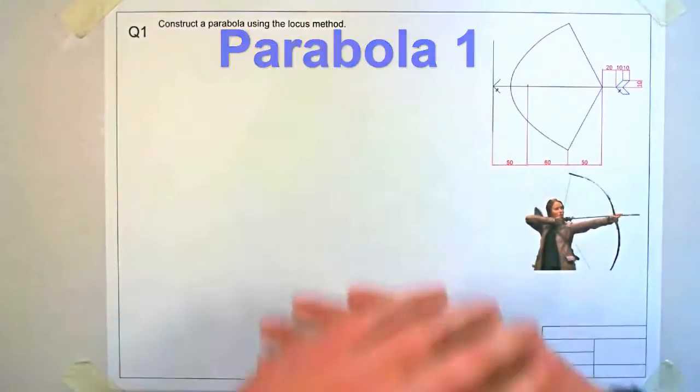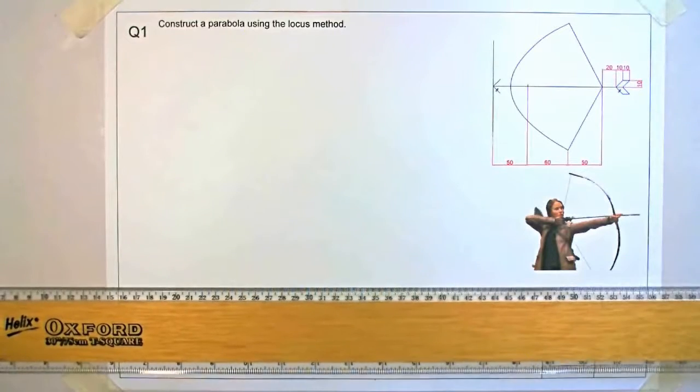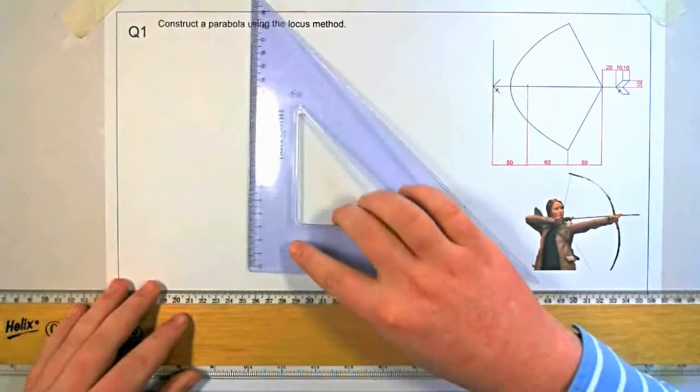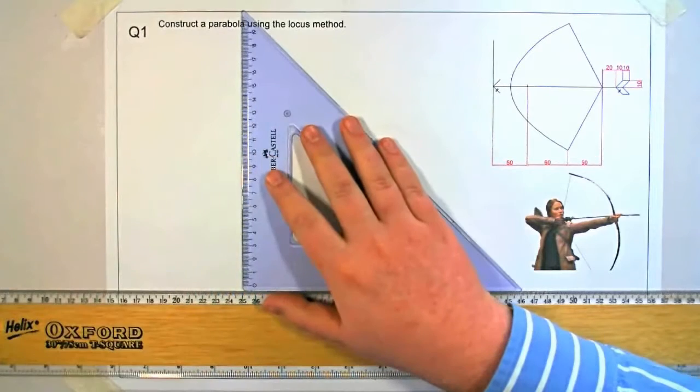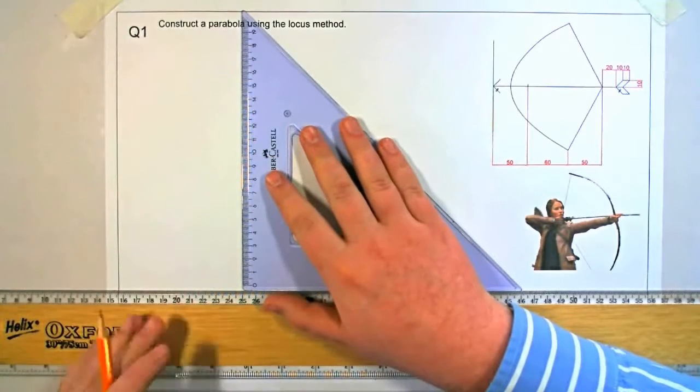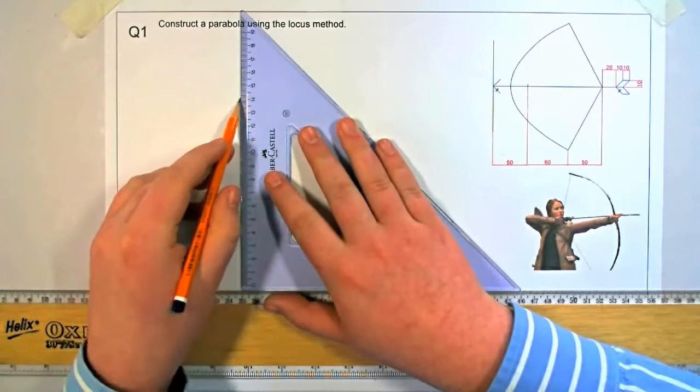Parabola 1. So construct the parabola using the locus method. In this we start with the directrix which is a straight line at the front of the arrow in this circumstance.